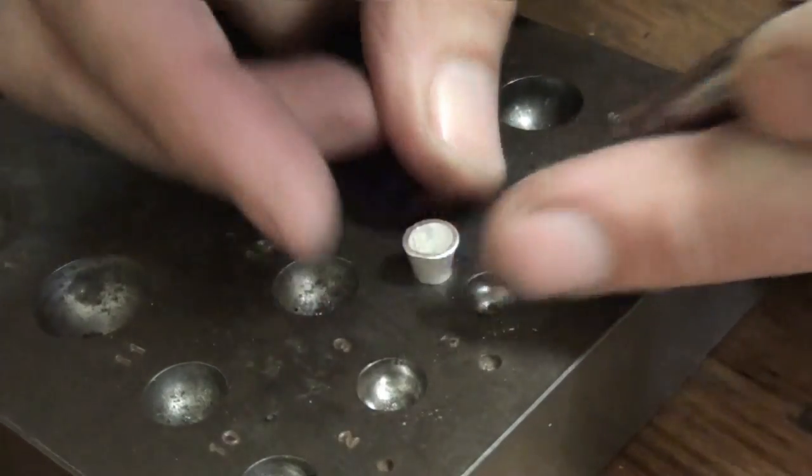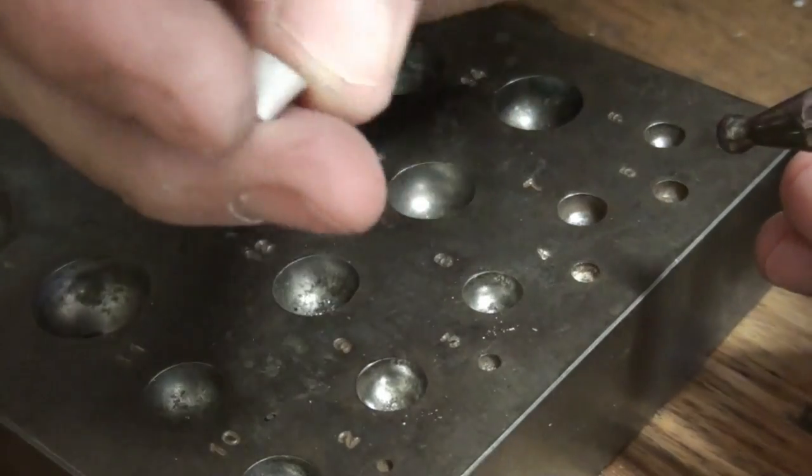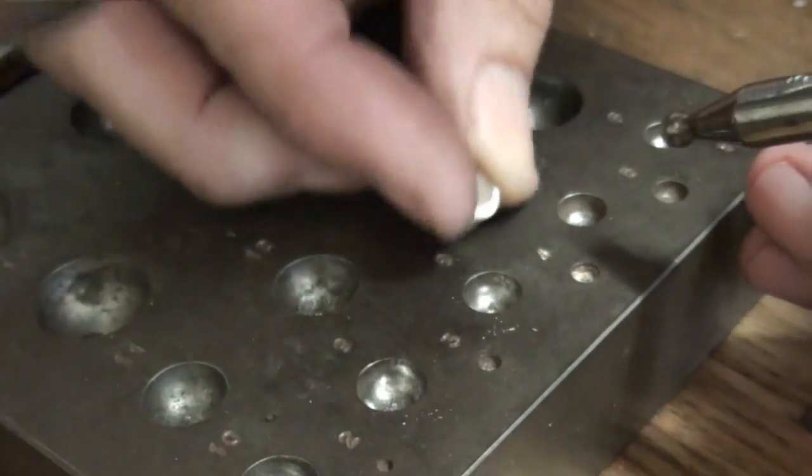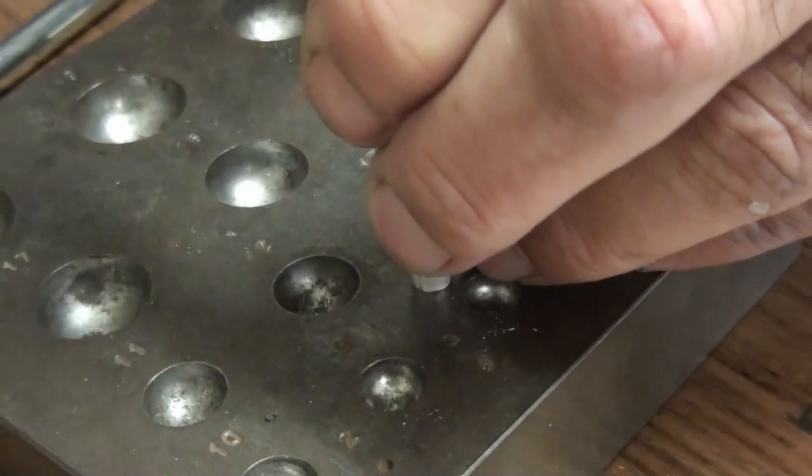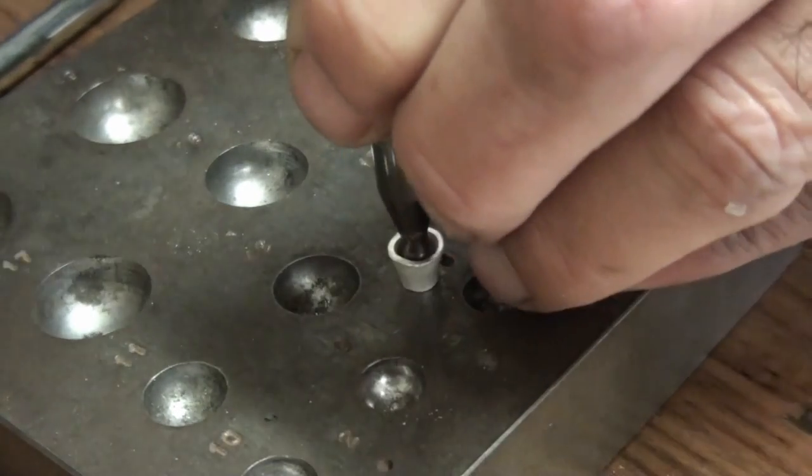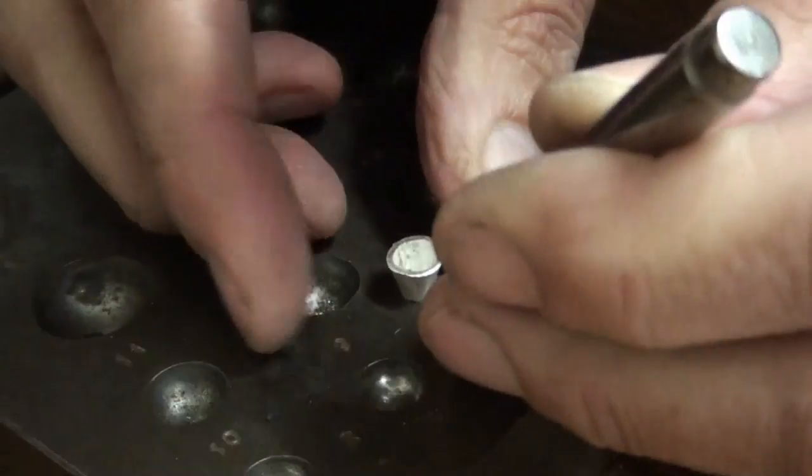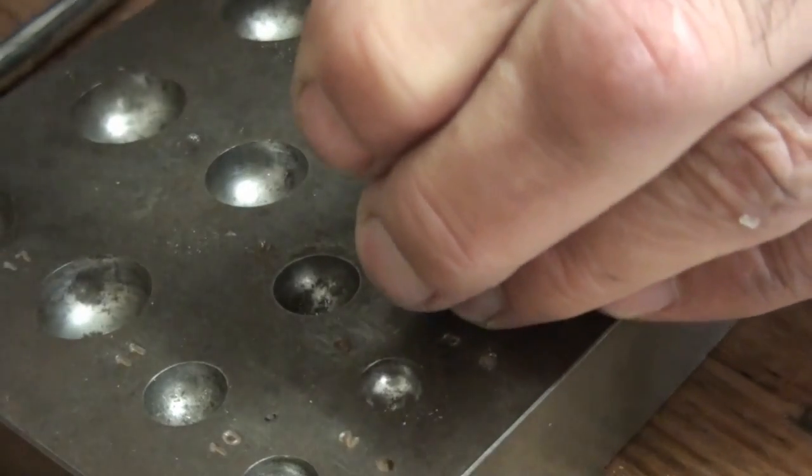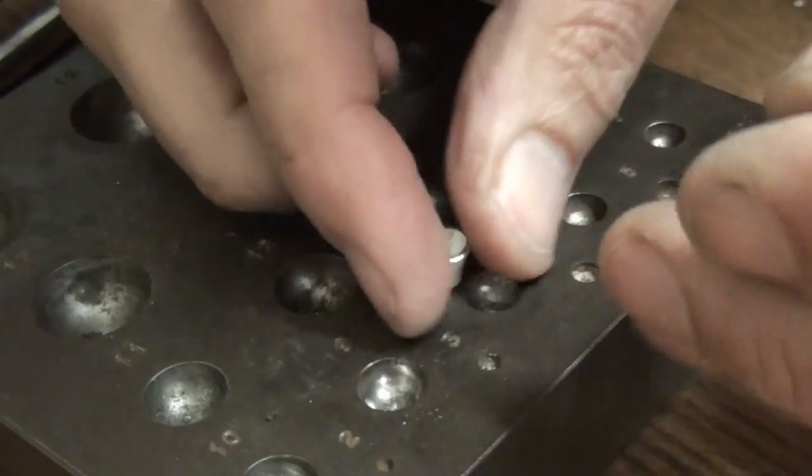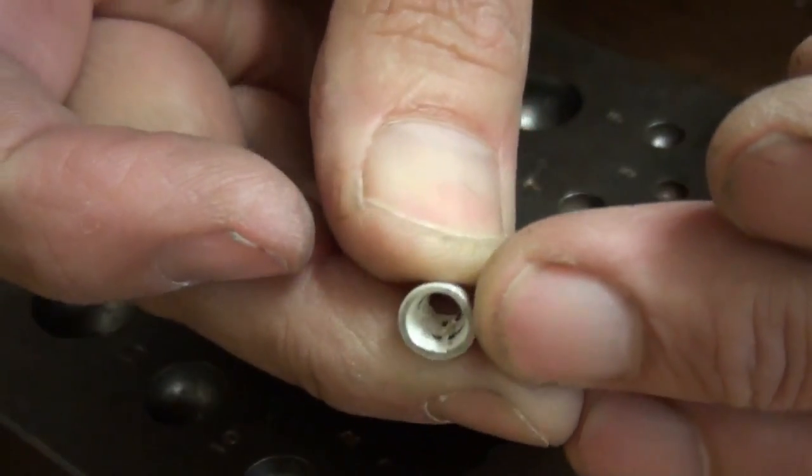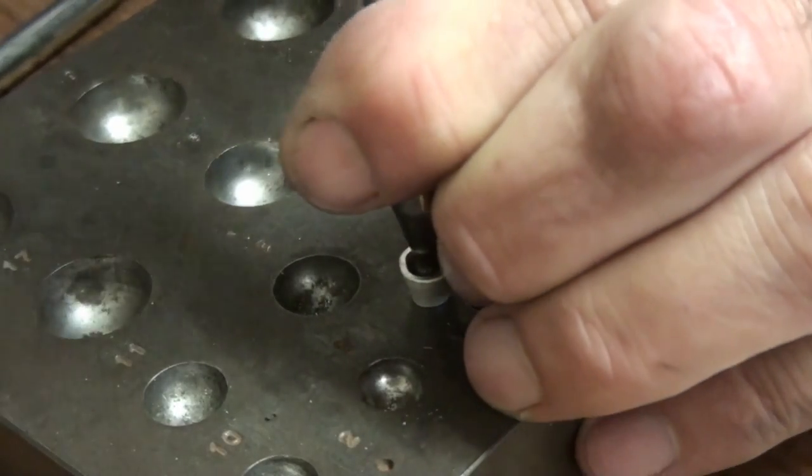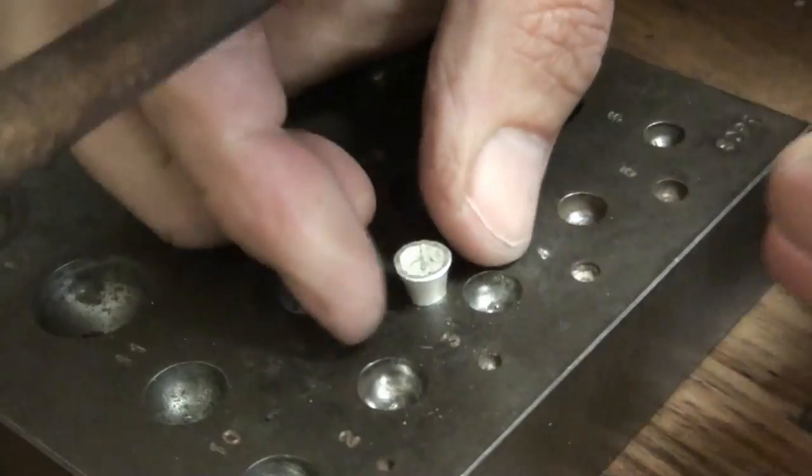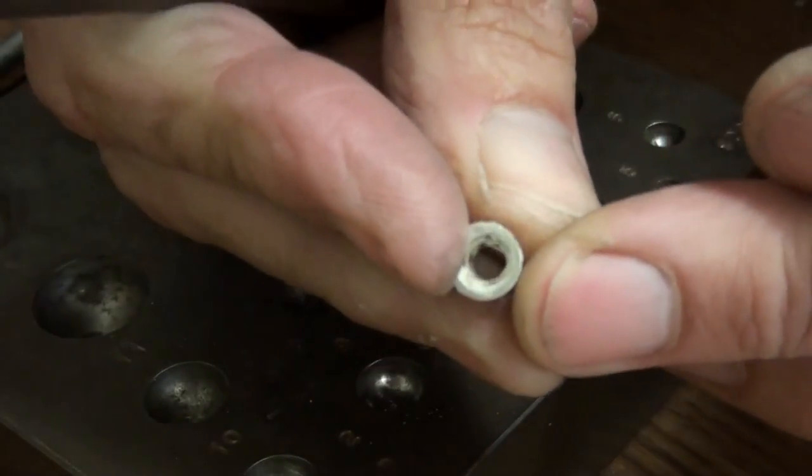Now we've got the bottom of the setting perfectly round, so we can start forming the inside going up. The next size punch I'm going to use is this one and this one goes all the way into the setting. The good thing about this, if you've pickled the setting it will be white inside. When you tap the punch in there, it'll leave a little silver or grey looking ring on the inside. You can see the start of it on the inside and once that's connected all the way around, you know it's perfectly round.